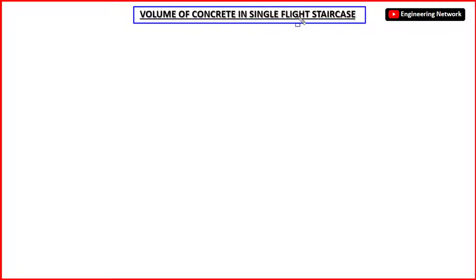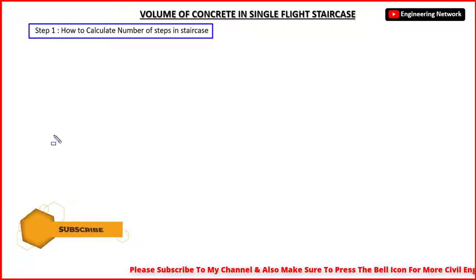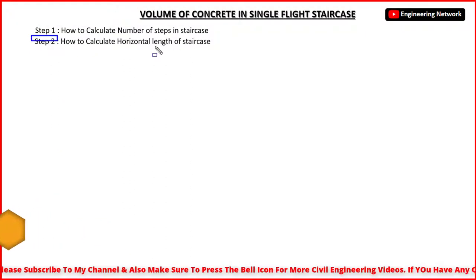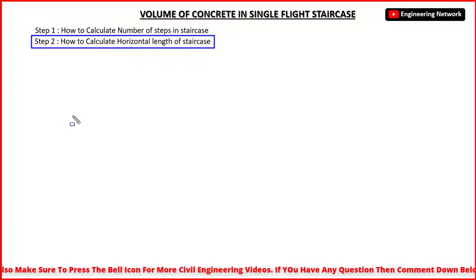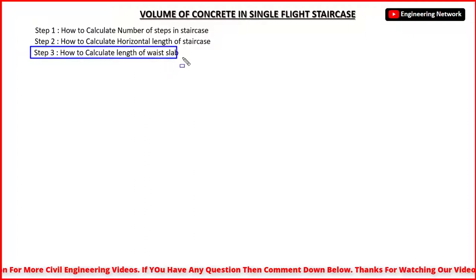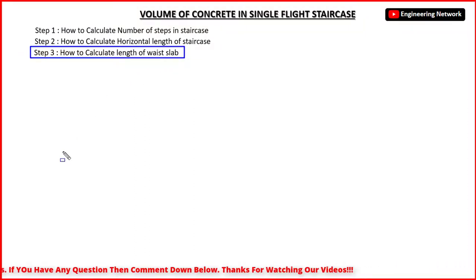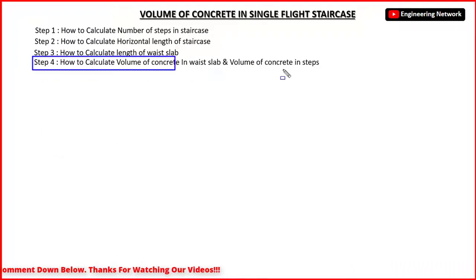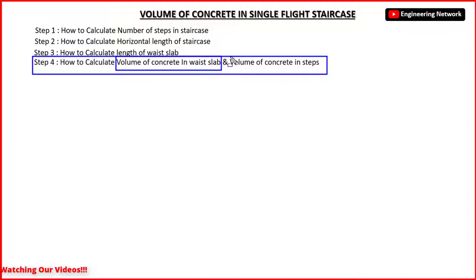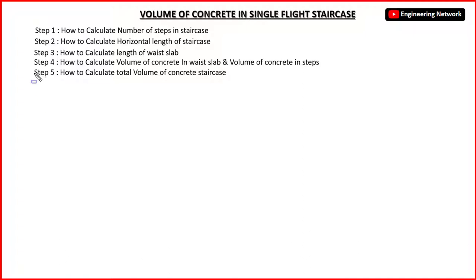In today's video lecture our topic is how to calculate the volume of concrete in staircase. This calculation will be completed in five simple steps. In step 1, I will teach you how to find out the total number of steps in a staircase. In step 2, how to calculate the total horizontal length. In step 3, how to calculate the length of waist slab. In step 4, how to calculate the volume of concrete in the waist slab and the volume of concrete in the steps. And in step 5, the total volume of concrete in the staircase.